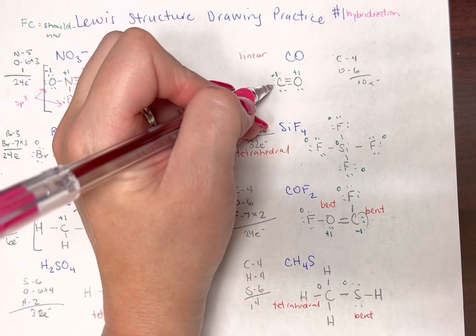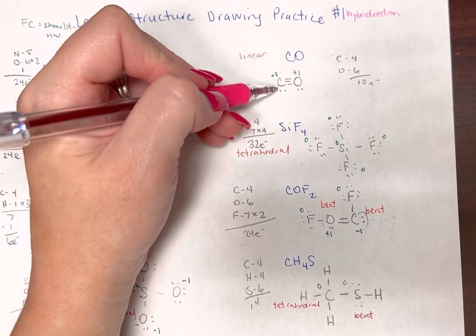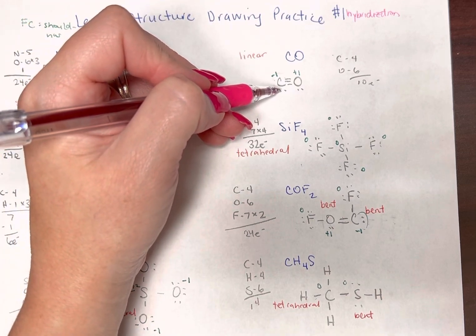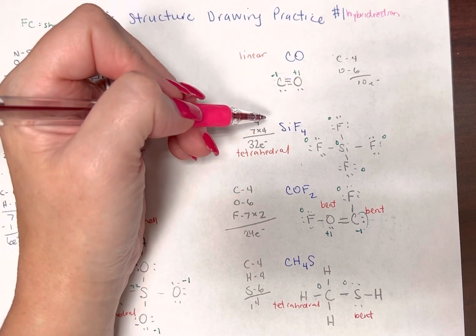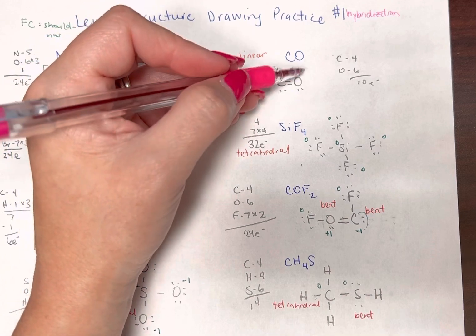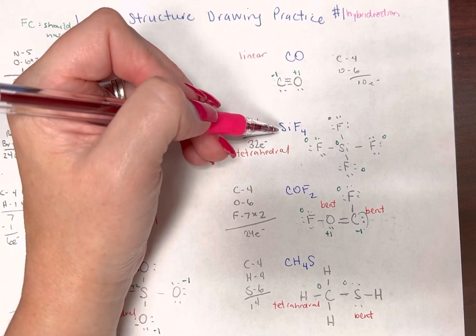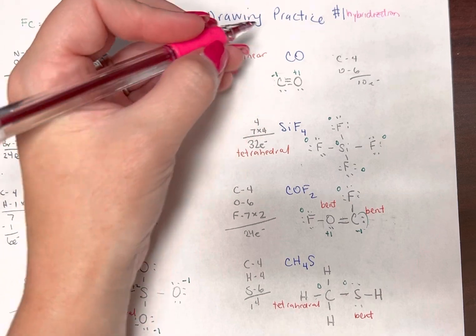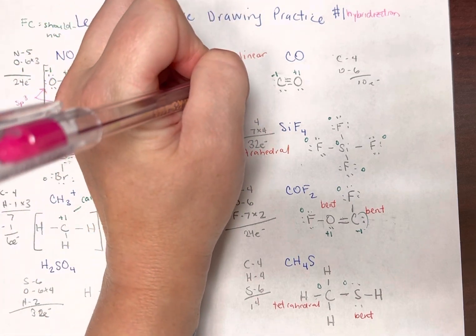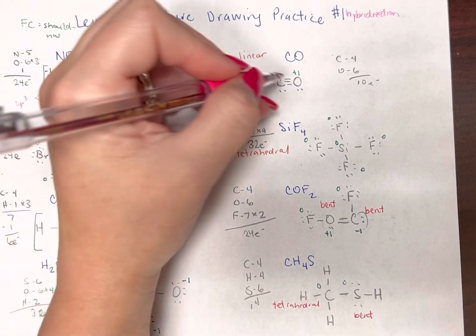Let's go over here to the carbon here. This carbon has one, two friends, so the lone pair counts as one and the oxygen counts as one. So friends minus one is sp and it's the same thing for the oxygen sp.